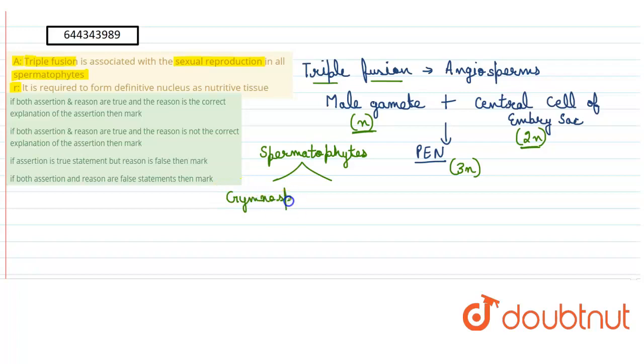It is further divided into two categories: gymnosperms and angiosperms. Now we have seen that triple fusion is a characteristic feature of angiosperms, so in this case triple fusion can be seen, but in case of gymnosperms it does not happen. Triple fusion is not seen in case of gymnosperms. There is no triple fusion. Therefore this assertion is wrong. It is not seen in case of all spermatophytes. This statement is false.